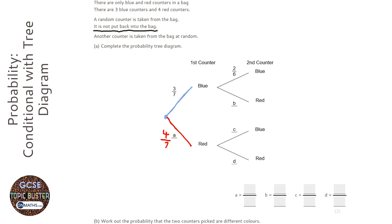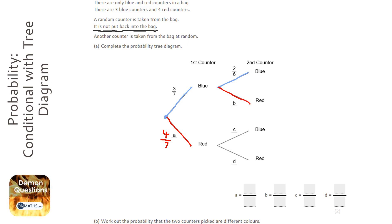If we picked a blue on our first counter, the probability of picking a blue again is two over six. Therefore the probability of picking a red will be four over six.